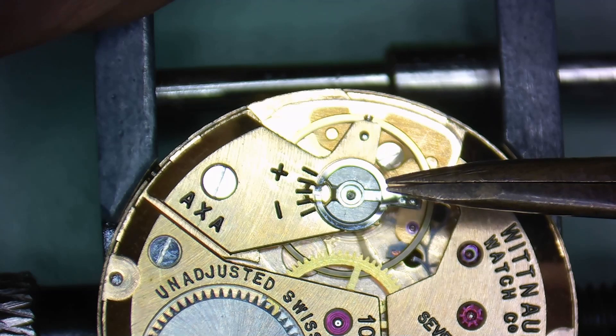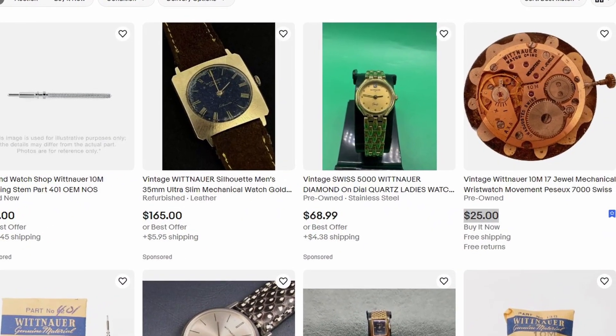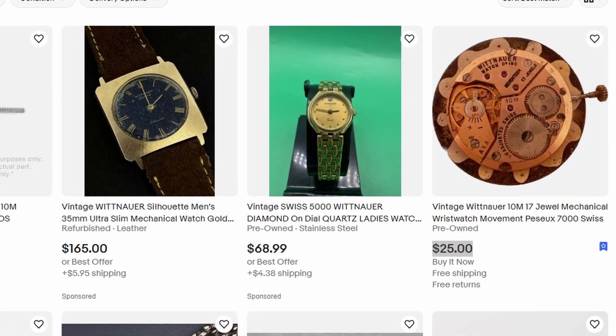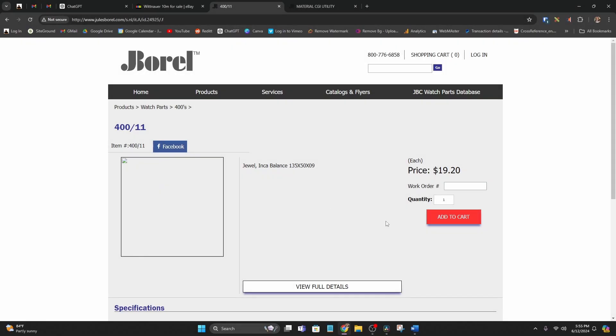If the jewel is from a vintage movement, you're probably going to need to buy a donor movement to replace the jewel. And if it's from a modern movement, at the very least you're going to need to replace the entire jewel setting.